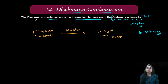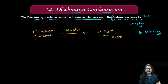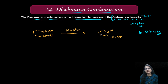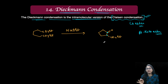Since you are having the intramolecular version, which is the Dieckmann condensation, the end product is going to be the same. This is still a beta-keto ester only. This is the ester group, this is the alpha carbon, so it's still a beta-keto ester.